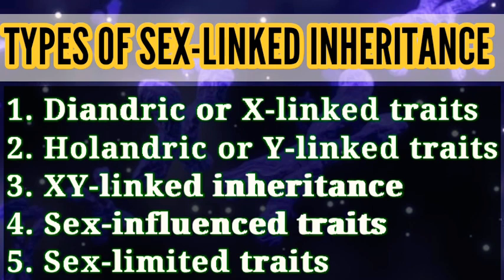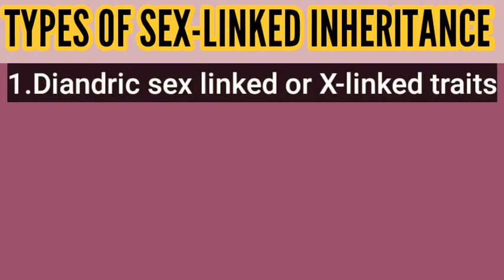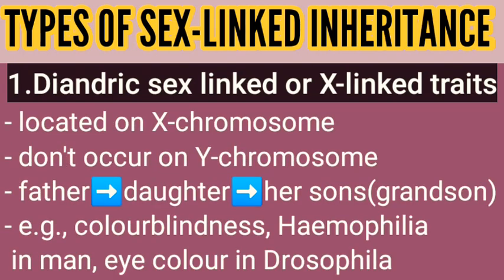X-linked traits, or diandric sex-linked traits: genes for these characters are located on the non-homologous segment of the X chromosome, and the alleles do not occur on the Y chromosome. Genes of such characters are transferred from the father to his daughters, and from daughters to their sons in the F2 generation — this is known as criss-cross inheritance.